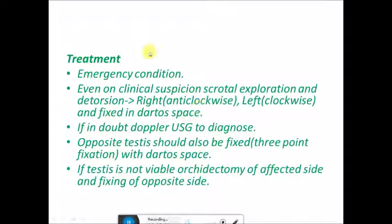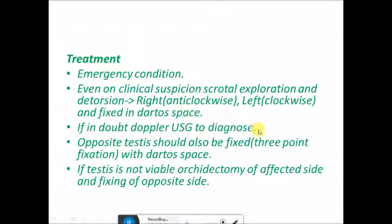The treatment — as it is an emergency condition — even if you are clinically suspecting torsion, you should not wait for any investigation and should proceed directly to surgery for detorsion. The right testes is detorted in an anti-clockwise direction and the left in clockwise direction, then fixed at three points in the dartos space: two lateral and one anterior. If in doubt, an ultrasound Doppler can be done, but you should hurry as the testes can be saved if operated within six hours.